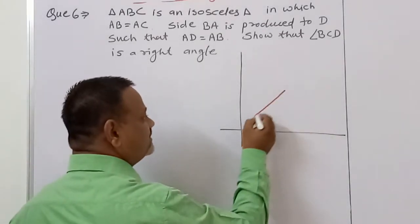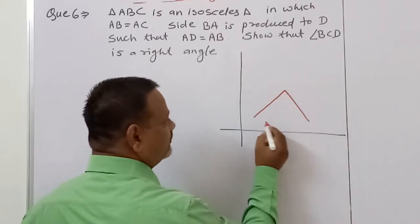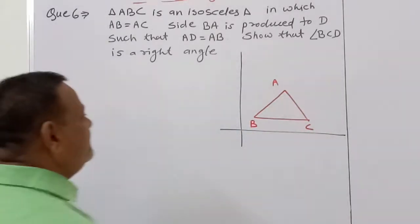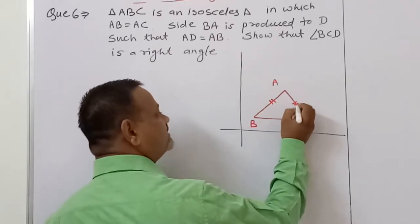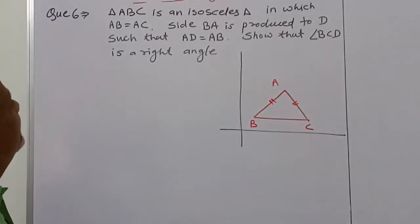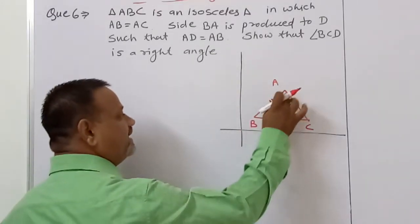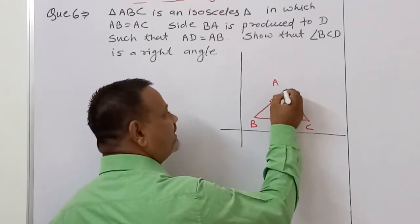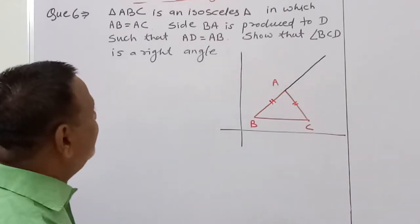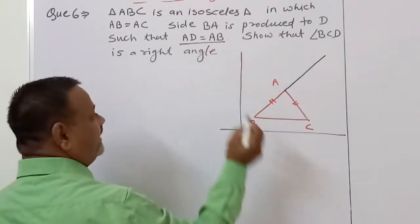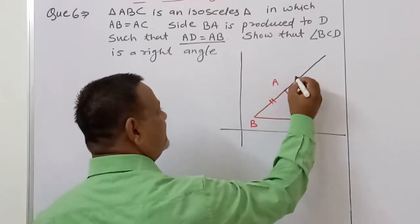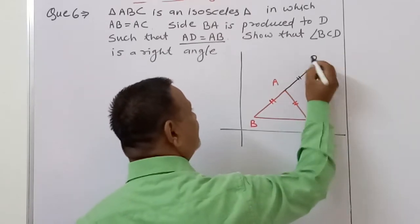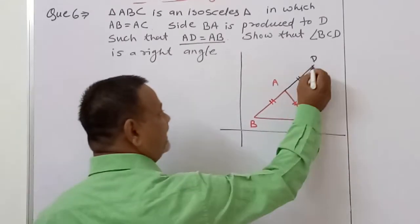This is triangle ABC with vertices A, B, C. It is an isosceles triangle in which AB is equal to AC — so this AB and this AC are equal. Side BA is produced to point D such that AB is equal to AD. So we consider point D and join D and C.